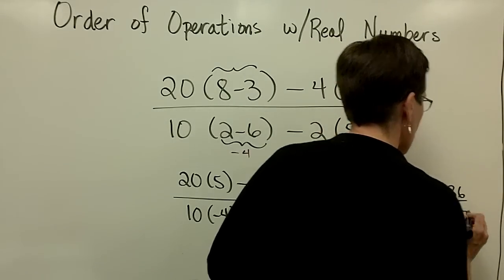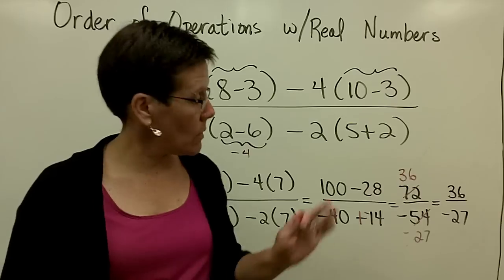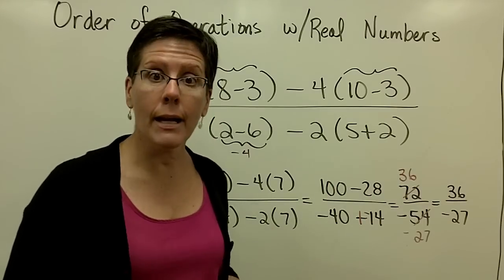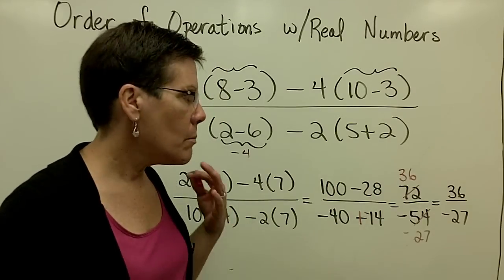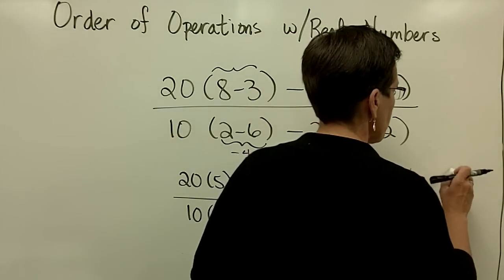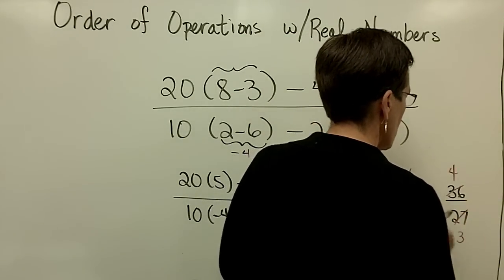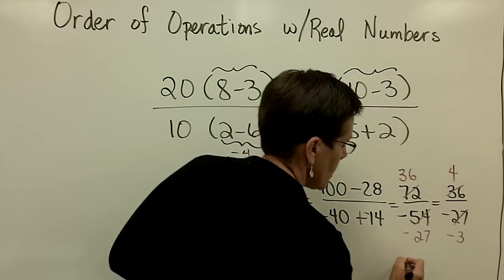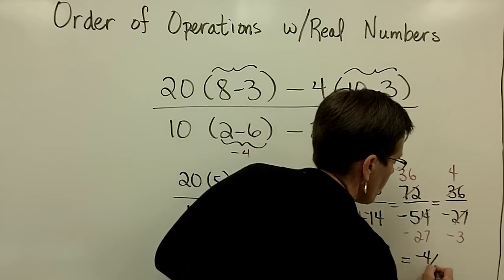36 over a negative 27. And now I'm noticing that those are both divisible by 9. 9 is the biggest number. Might as well go for 9 rather than 3. And 9 goes into here 4 times, and 9 goes into here 3 times. So my final answer is a negative 4 over 3.